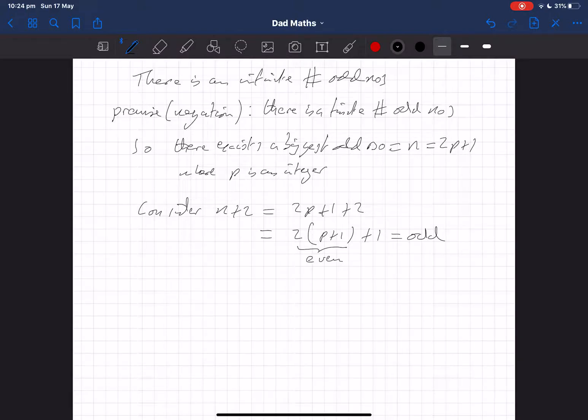So what do we have? What we have is that n plus 2 is odd, and n plus 2 is bigger than n because it's 2 more added on to n. And that clearly contradicts that n is the biggest odd number.